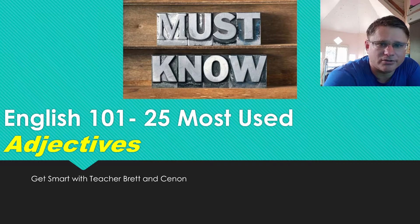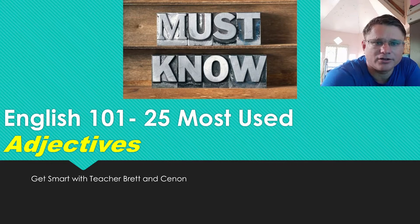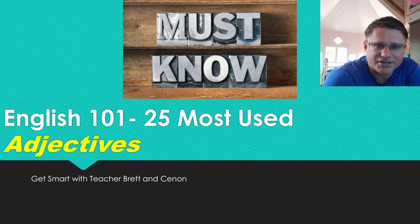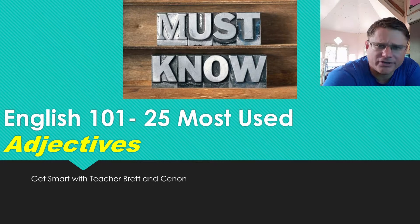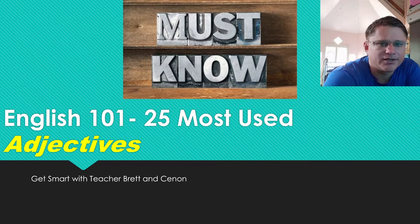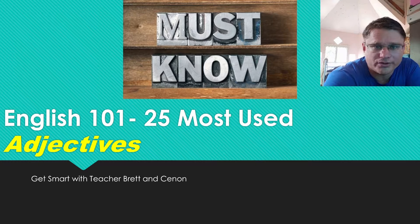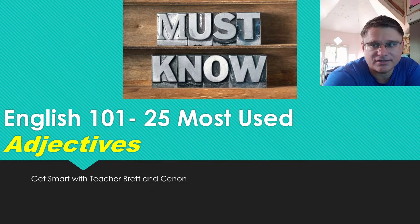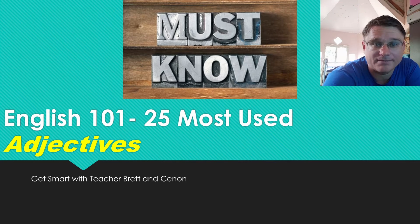Hello, everyone. Welcome to Get Smart with Teacher Brett and Sinan, and today we are talking about adjectives. These are the most used adjectives in the English language. Adjectives are very important because you use them to describe something — the size, if it's big or small, old, young, the color, if it's delicious or beautiful. Adjectives are very important, and they are what you use to describe something else.